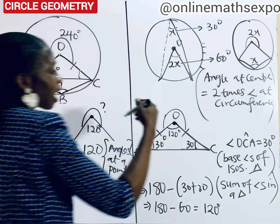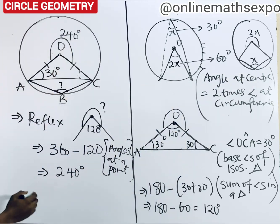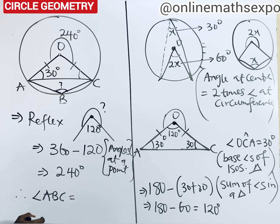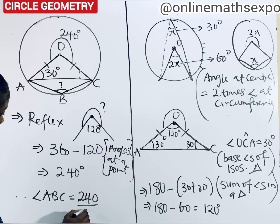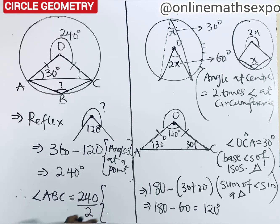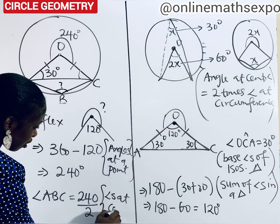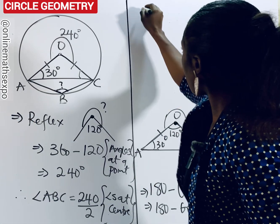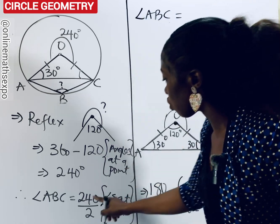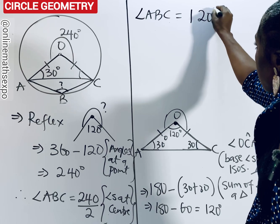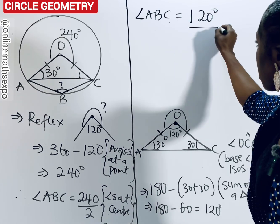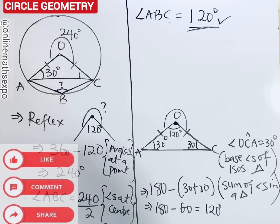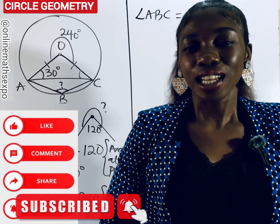Now if the reflex angle at the center is 240 degrees, remember our theorem: two times the angle at the circumference equals the angle at the center. So the angle at the circumference should be half. We conclude that angle ABC equals 240 divided by 2. Our reason: angle at center equals two times angle at circumference. Simplifying, angle ABC equals 120 degrees.